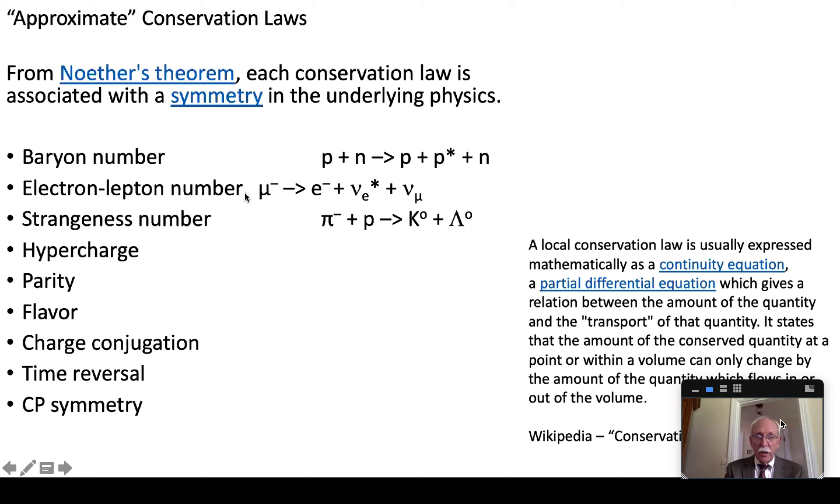What's the electron lepton number for a muon? Zero. What is it for an electron? Plus one. What is it for an anti-electron neutrino? Negative one. So I get zero on this side and this is a reaction that can happen.